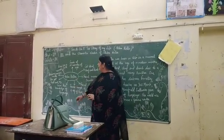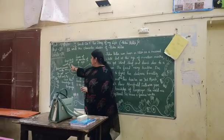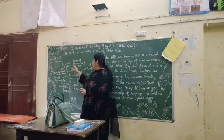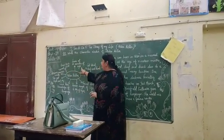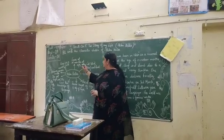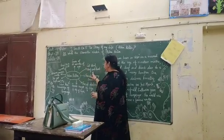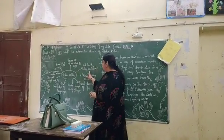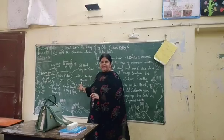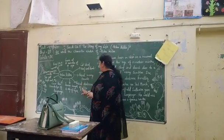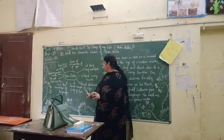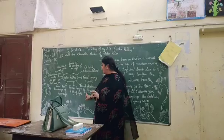First of all, she was born as a normal child. Then she had a fever at the age of 19 months, after which she got blind, deaf and dumb. Due to this, she faced many troubles and fought the darkness of life.